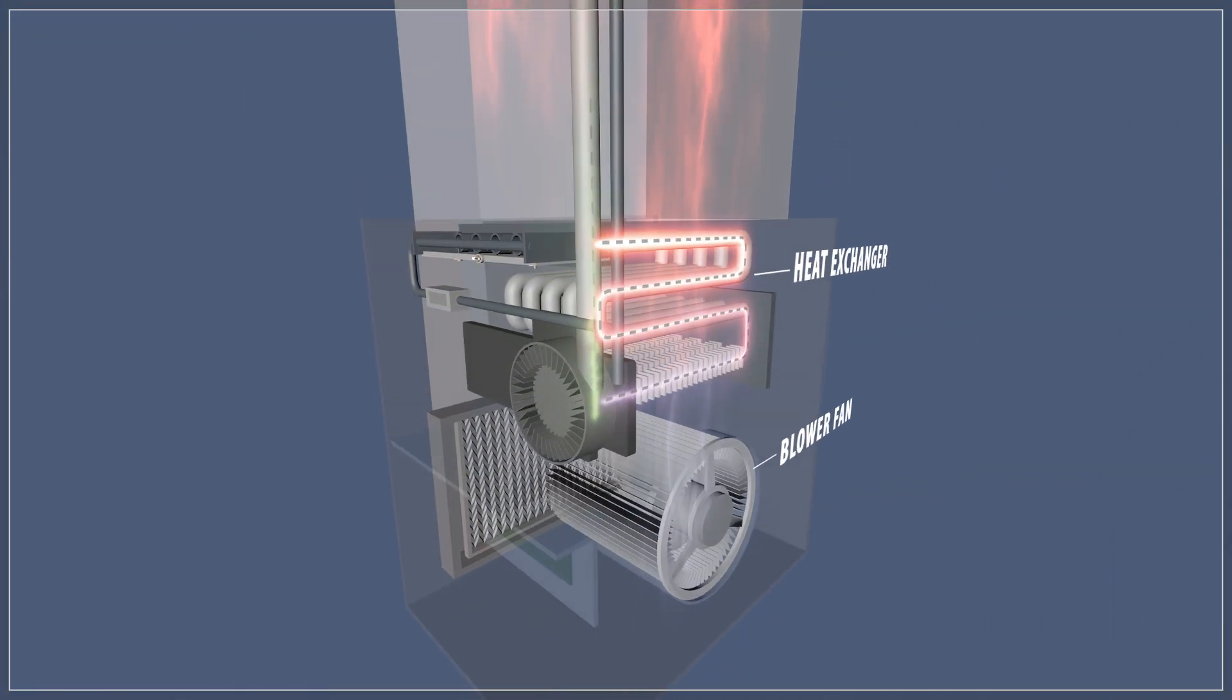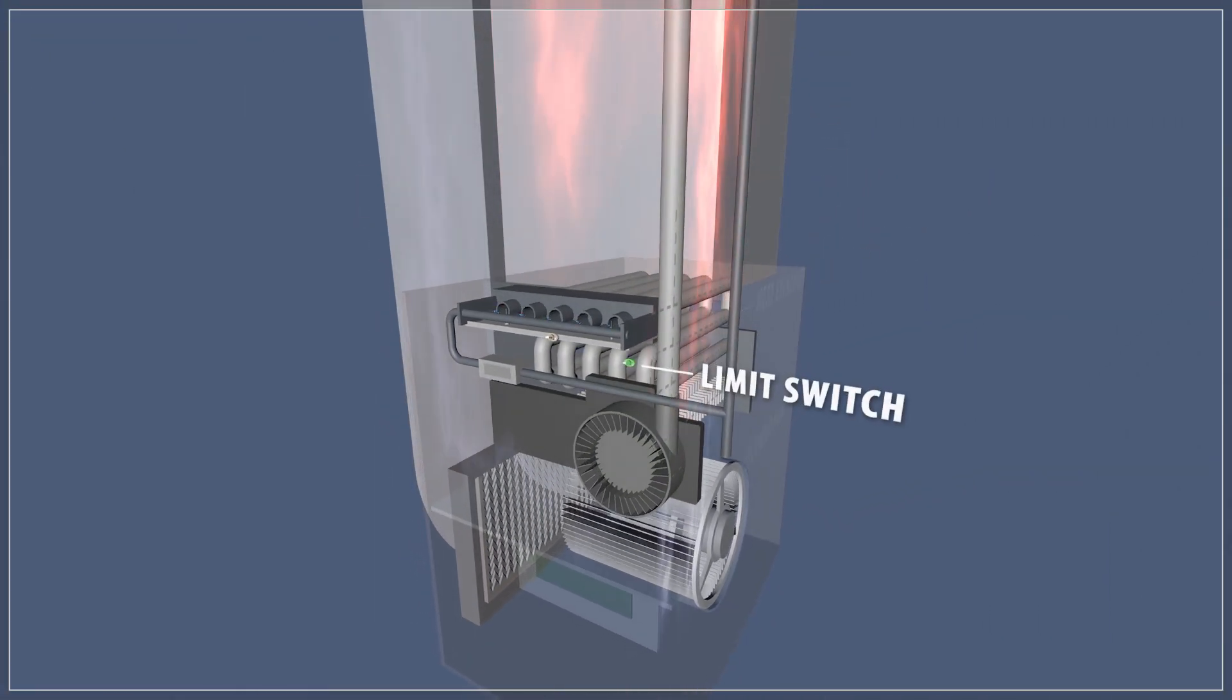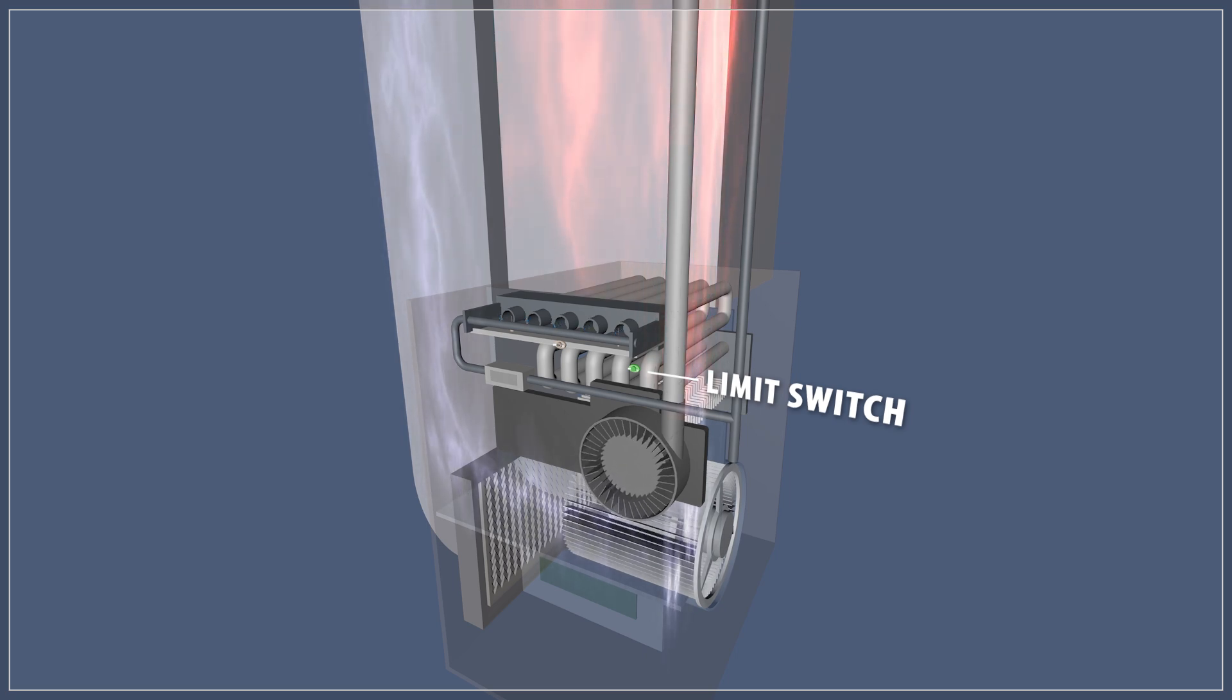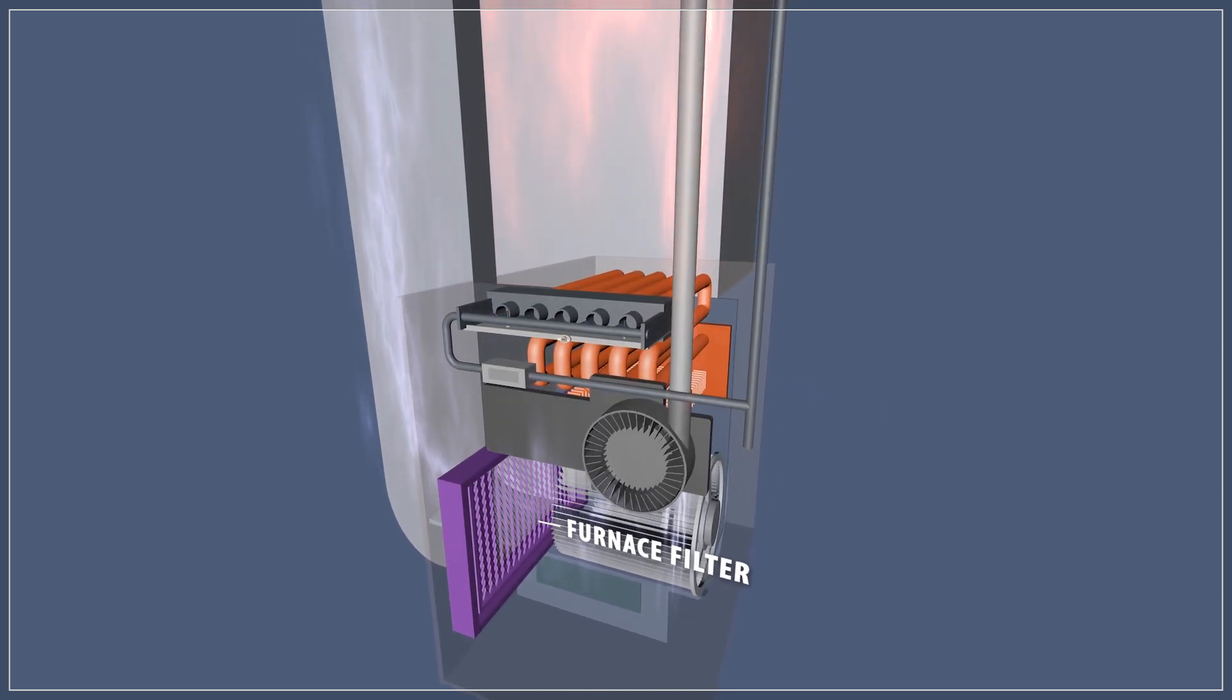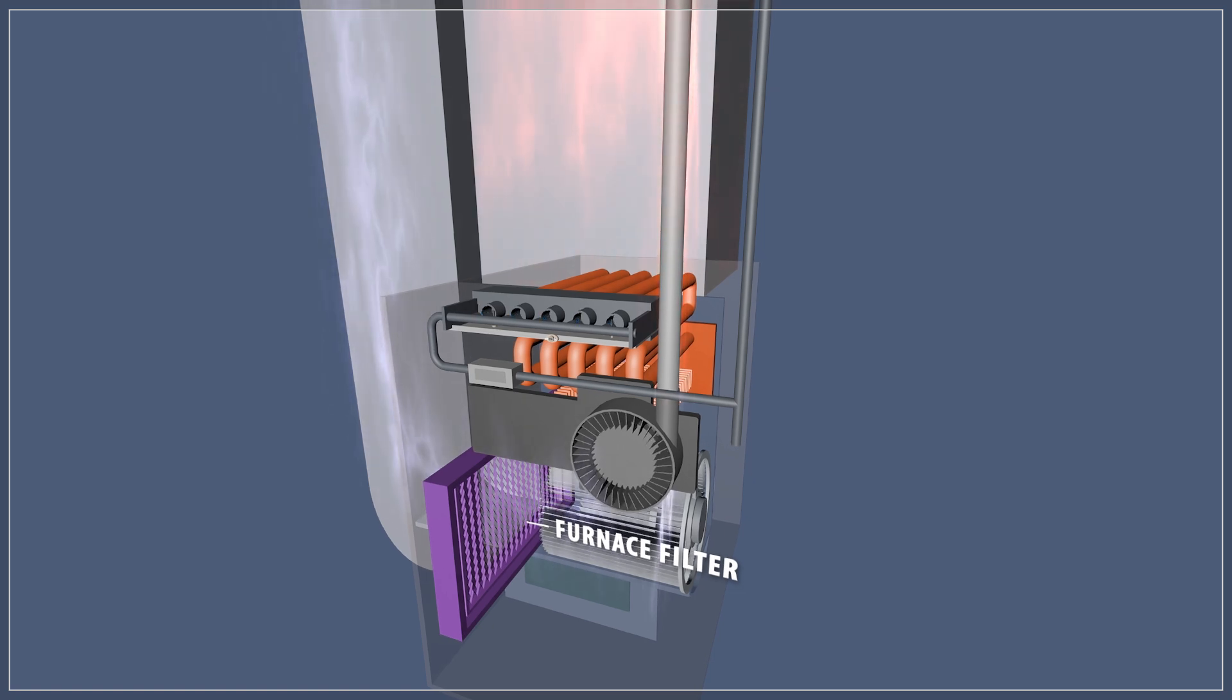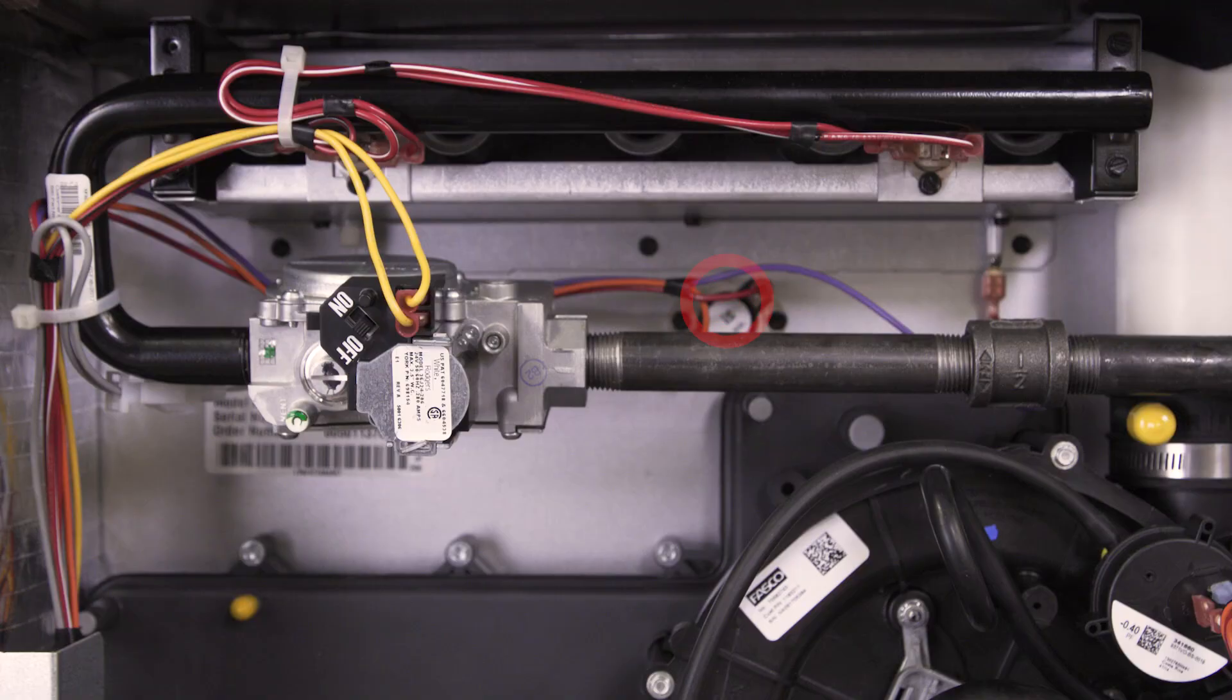The limit switch monitors the temperature of the air passing over the heat exchanger and will shut off the furnace if the system overheats. Any restriction of the airflow might cause the heat exchanger to overheat. This is why it's essential to replace the furnace filter every three to six months. If the airflow is good and the blower fan cycles on and off, then the limit switch could be defective.